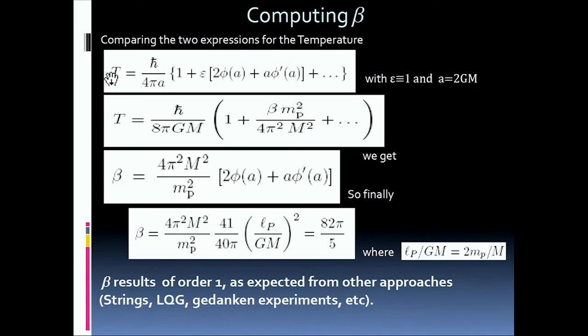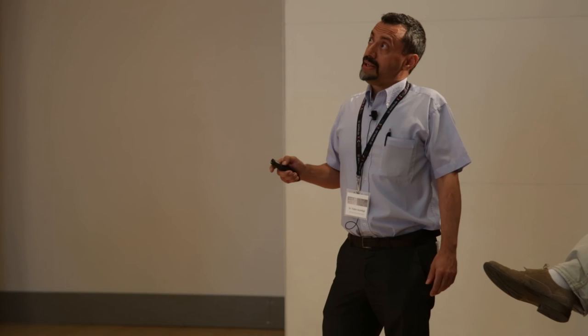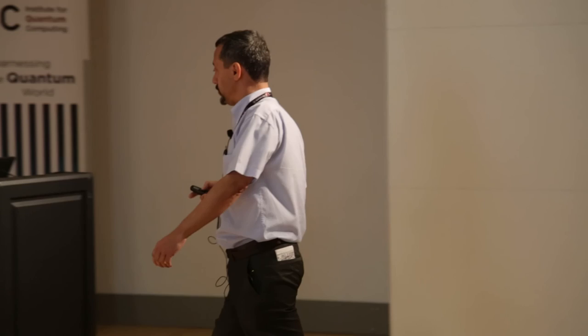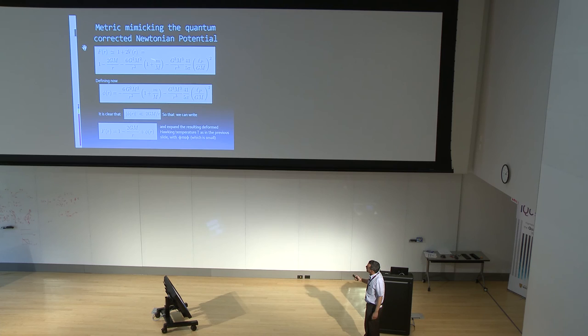Beta comes out, if we want these two temperatures to be equal at least at the first order, you get this relation between beta and the deforming terms here. Well, just put inside the function phi that we have seen before in the previous slides, which as I said has been computed as a low energy effect of GR in these papers of Donoghue and other people. There is a group in Novosibirsk that have done this.